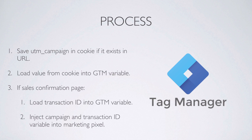The rough process is this: we're going to save the UTM campaign parameter in a cookie if it ever exists in the URL. We're going to load that value from the cookie into a GTM variable on every page view so it's available to access. Then finally, if this is a sales confirmation page, we're going to fire the sales marketing tag and inject the GTM variable loaded from the cookie into that tag. Optionally, we're also going to pick up the transaction ID into a variable and fire that in the marketing pixel too. This implementation requires no development — it can all be done in Google Tag Manager.